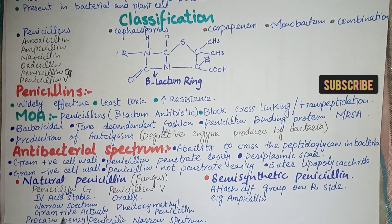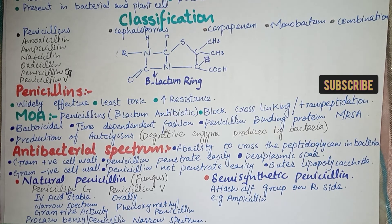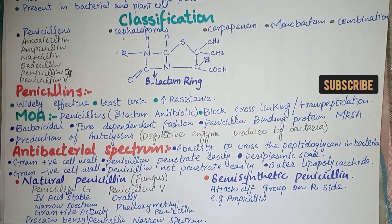Penicillin G's activity is predominantly against gram-positive organisms. The salt form of penicillin G is benzyl penicillin, while penicillin V contains phenoxymethyl penicillin. Both penicillin G and V have a narrow spectrum.